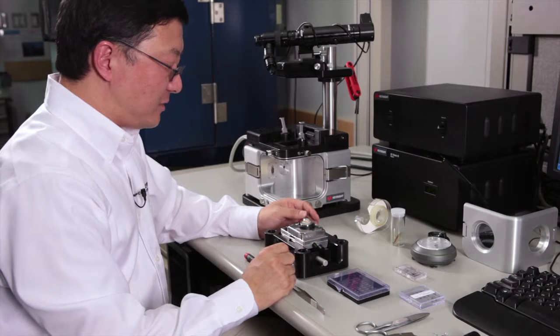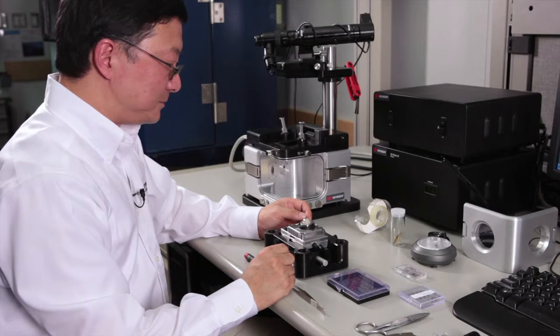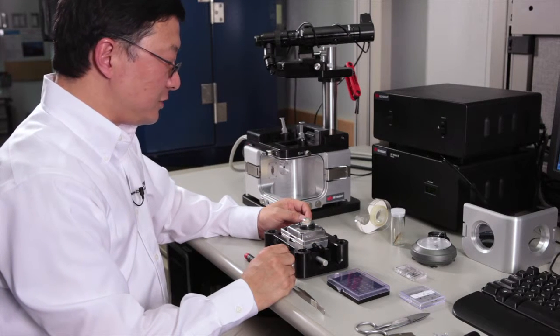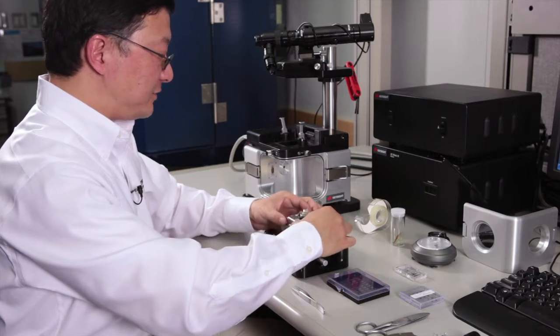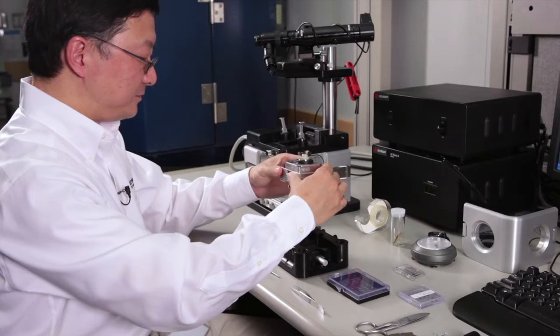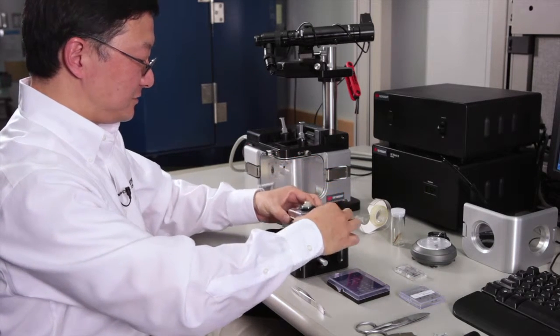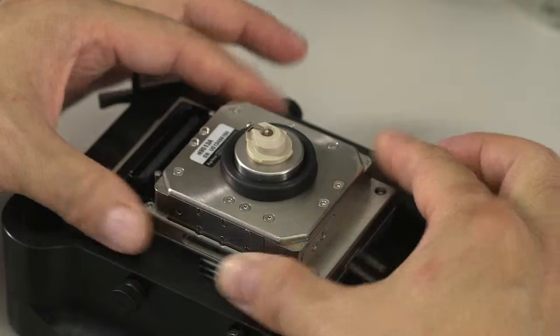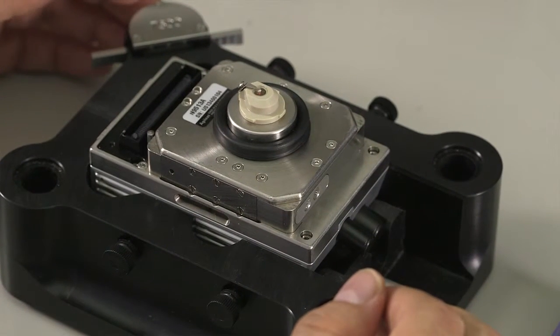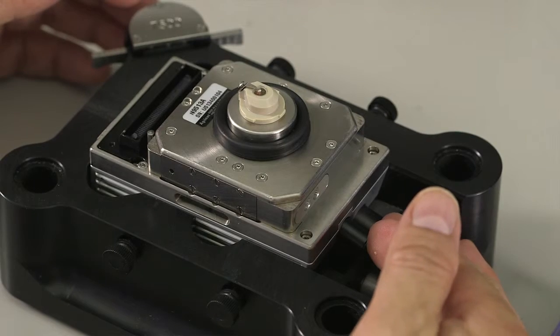So next is to mount the cantilever to your scanner. In order to do so, we need to have the AFM scanner mounted on the scanner station. If you are right-handed, you need to have the adjust knob towards the right-hand side.